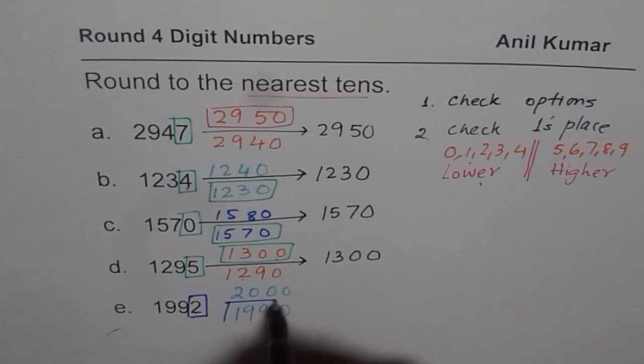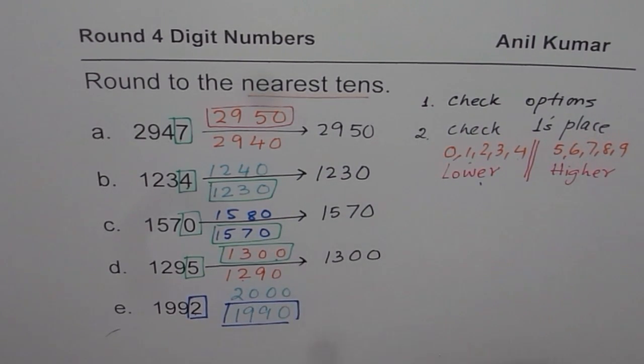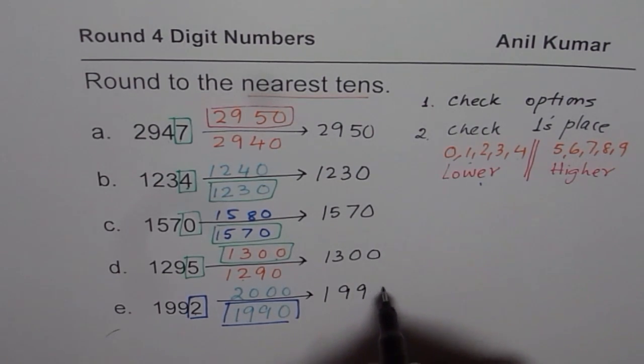Lower number. So the answer is 1990. 1,992 rounds to 1,9,9,0.